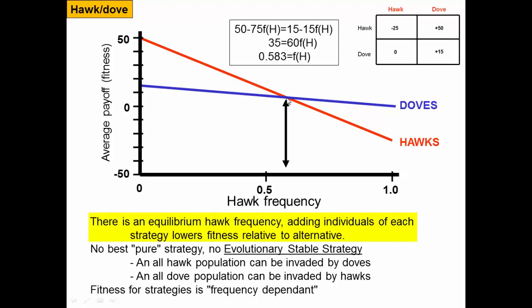There's an equilibrium hawk frequency where if you add more hawks, hawks are not as good as doves, and if there were fewer hawks, they would actually do better. If the population has this many hawks and hawks increase, they don't do as well — doves do better — so hawk frequency goes back down. Conversely, if you reduce the number of hawks, hawks are doing better and their frequency goes back up. This equilibrium is self-correcting: any time the frequency goes up, being a hawk is discouraged; any time it goes down, being a hawk is favored.